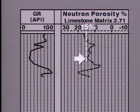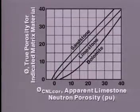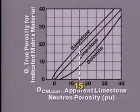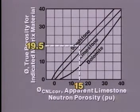Here, our curve reads 15% apparent limestone neutron porosity. On our chart, we go up from 15% on the apparent porosity scale until we intersect the sandstone line, then across to find the true neutron porosity for sandstone, which in this case is about 19.5%.